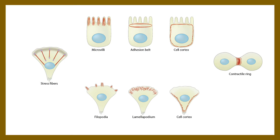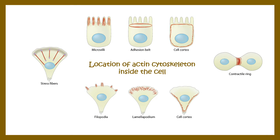Microfilaments can be found in different locations such as microvilli, adhesion belts, cell cortex, contractile rings, filopodia, lamellipodia, and even in stress fibers. Their organization can be very different depending upon where they are found, and they are broadly distributed in different locations in epithelial cells and other cell types.